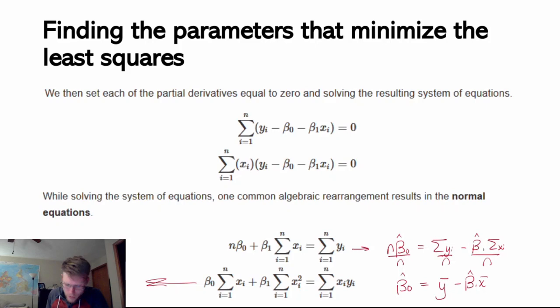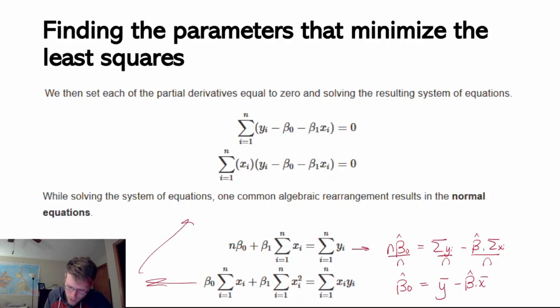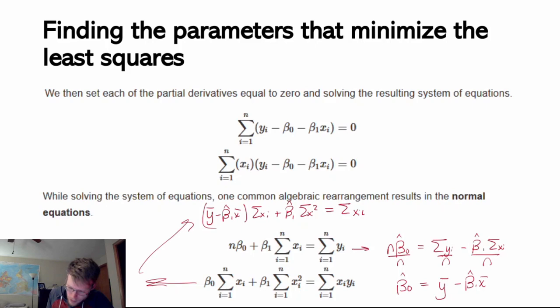I'll replace beta hat 0 with y bar minus beta hat 1 times x bar. So I'm going to have y bar minus beta hat 1 times x bar, times the sum of x sub i, plus beta hat 1 times the sum of x sub i squared, equals the sum of x sub i times y sub i.